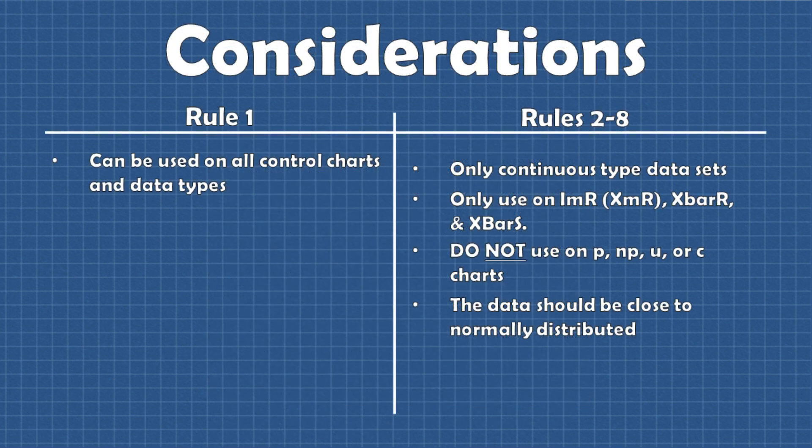Another thing worth noting is that rules two through eight should only be used on charts to analyze continuous type data sets. So these rules should not be used on P charts, U charts, or anything like that. The data set should also be close to normally distributed because all the probabilities for signals and false alarms for each of the rules were calculated under this assumption.